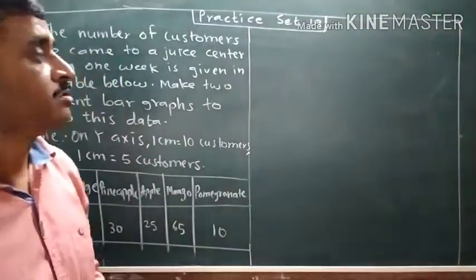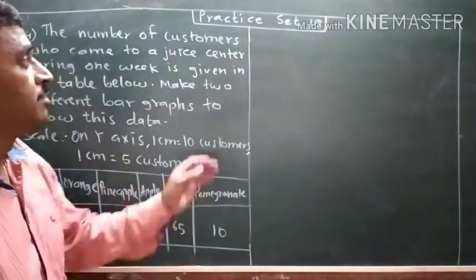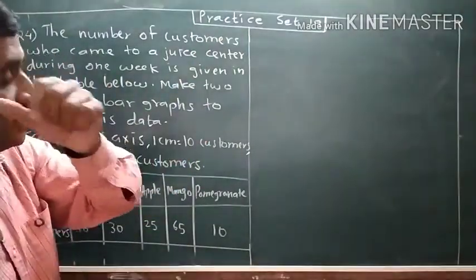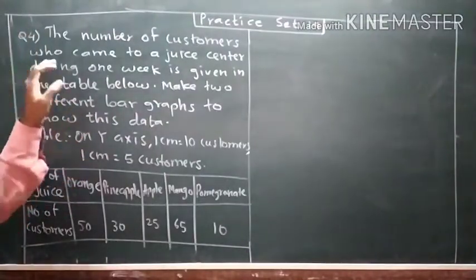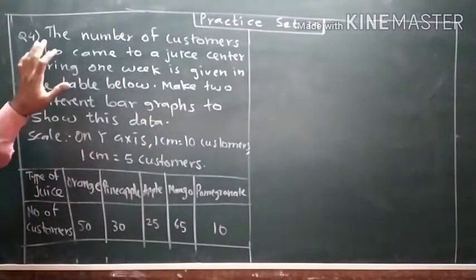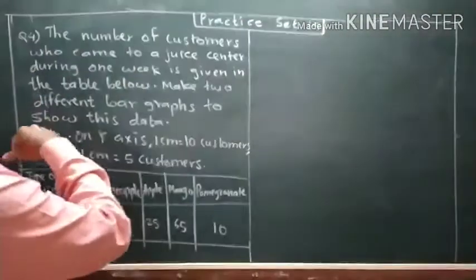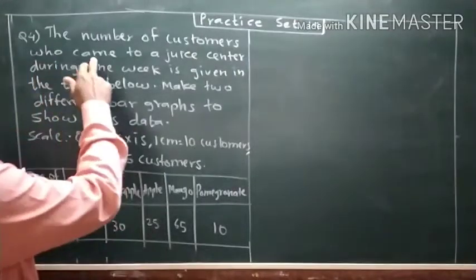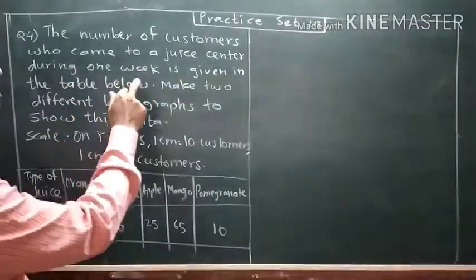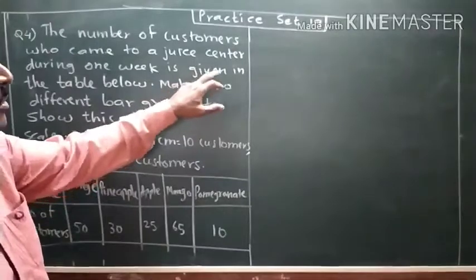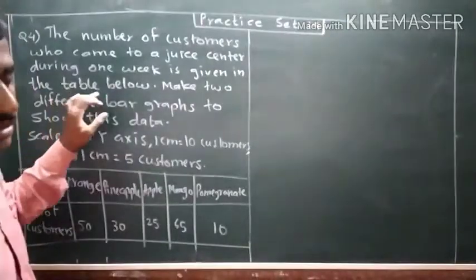Good morning students, today we are going to see episode 19, in which question number 4 is about the number of customers who came to a juice center, and that is given in the table below.